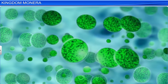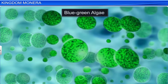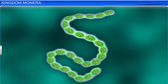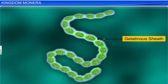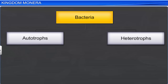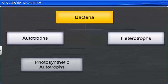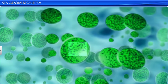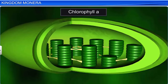Cyanobacteria, commonly known as blue-green algae, are examples of eubacteria. They are unicellular, filamentous algae that live in colonies. Their colonies are usually surrounded by gelatinous sheaths. Bacteria can be divided into autotrophs as well as heterotrophs. Autotrophs can be further classified into photosynthetic autotrophs and chemosynthetic autotrophs. Cyanobacteria have chlorophyll A and, like plants, are photosynthetic autotrophs — that is, they synthesize their food by using light energy.